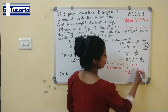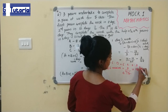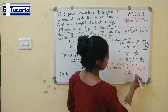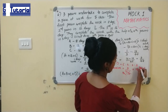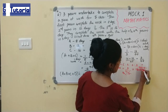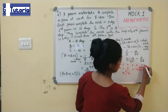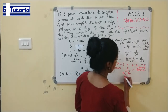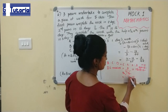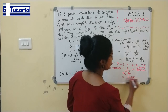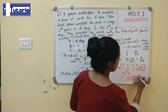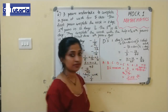3/16 × 1200 = 3 × 75 = 225. So D receives Rs. 225.